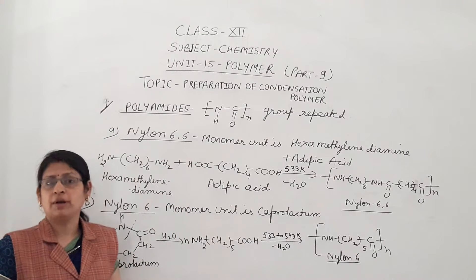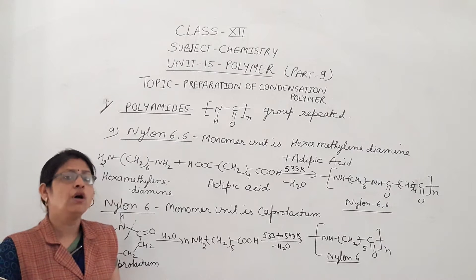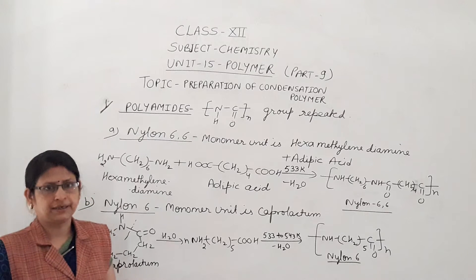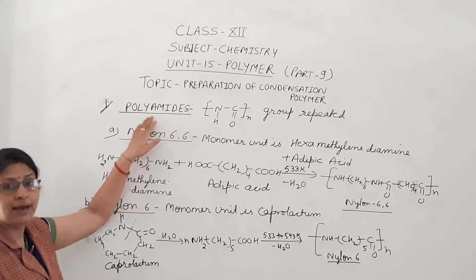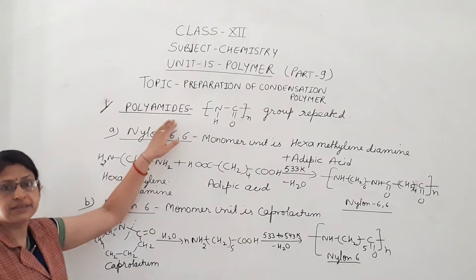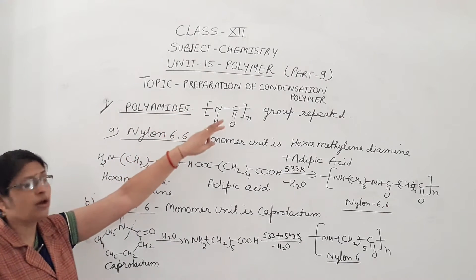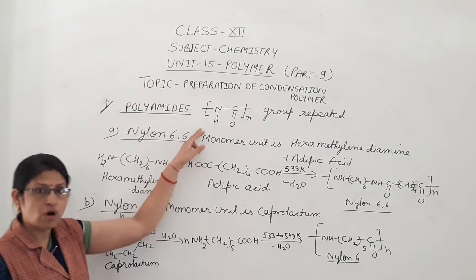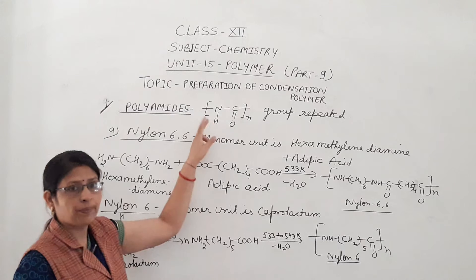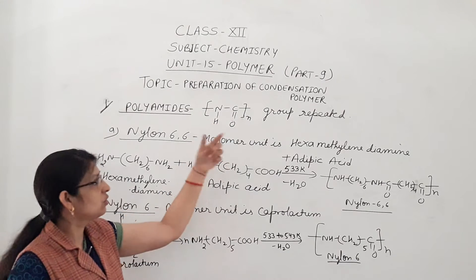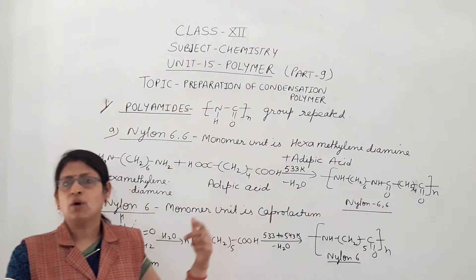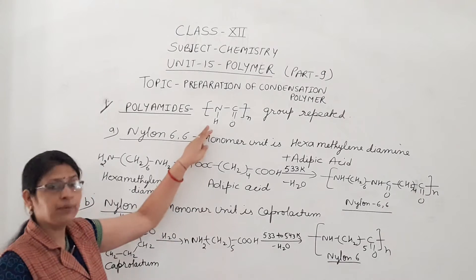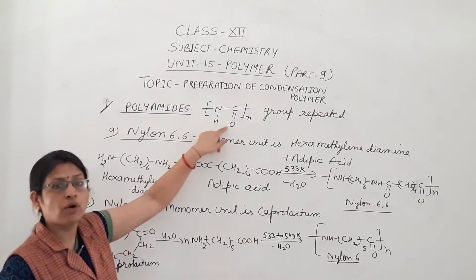In condensation polymer, I have already told you in monomer unit functional groups are present. In this video I take polyamides. The condensation polymer that are in the category of polyamides because in this group NH-C=O, this group is repeated. In polyamides, which group? Amido group NH-C=O.